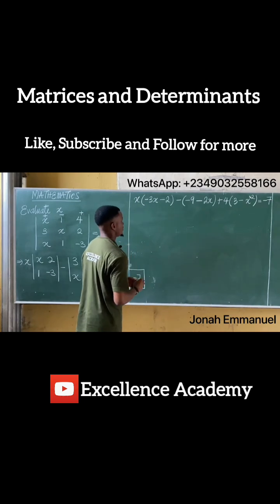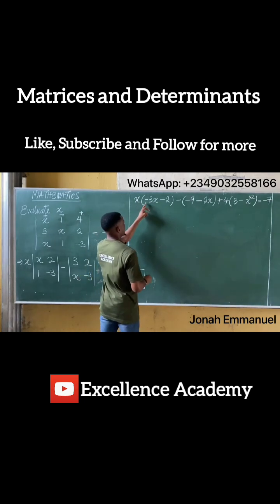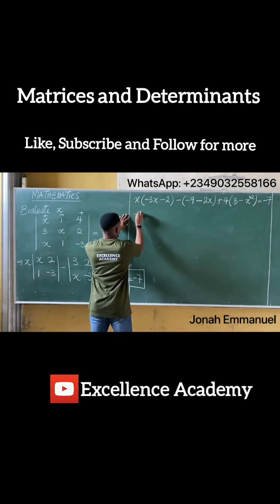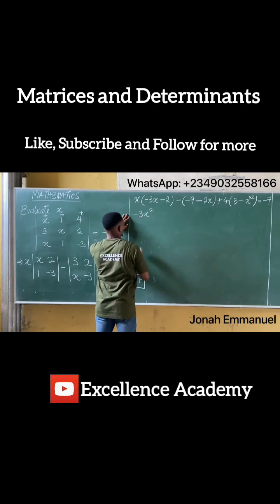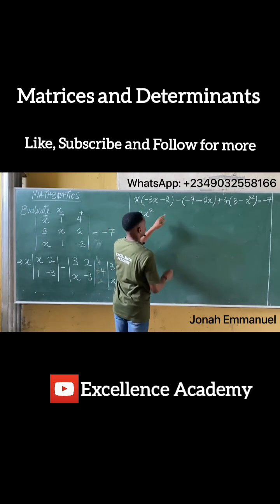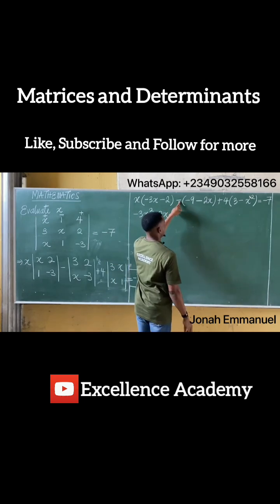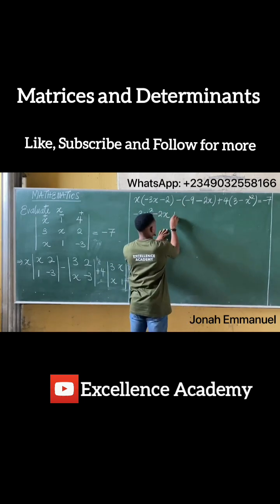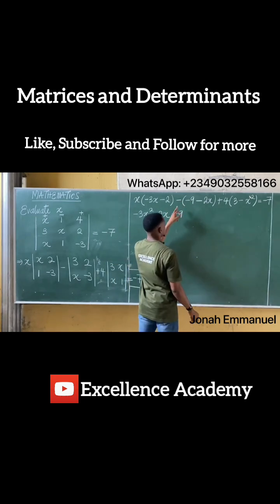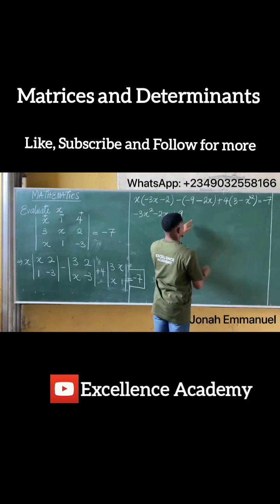Alright, next up to expand brackets. 3 times minus x gives you minus 3x squared. X times minus 2 gives you minus 2x. Minus times minus 9 gives you plus 9. Minus times minus 2x gives...